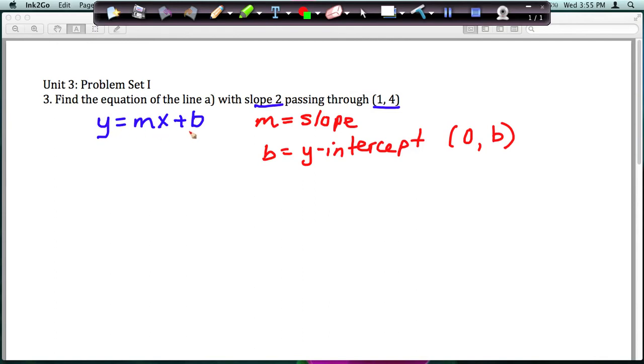So the first thing I need to do is find b in order to write the equation of the line. And in order to do that, I need to plug in my point values for y and x.